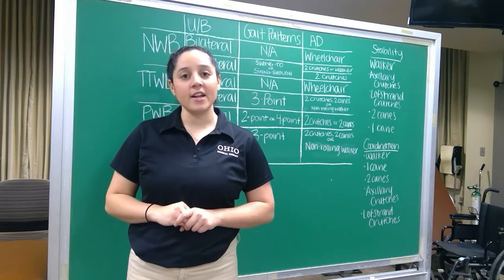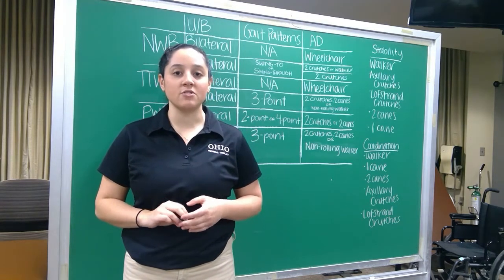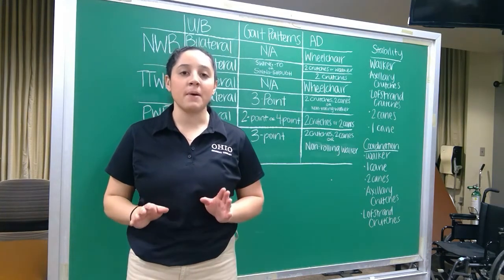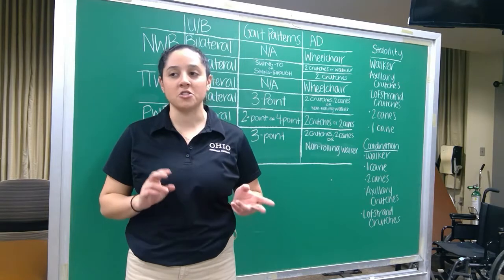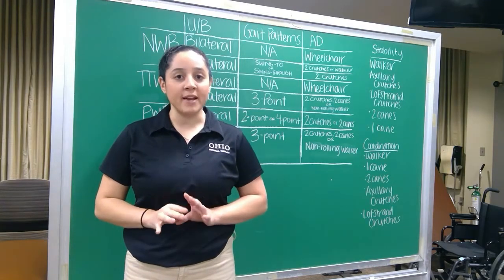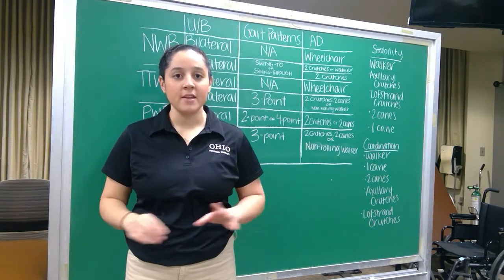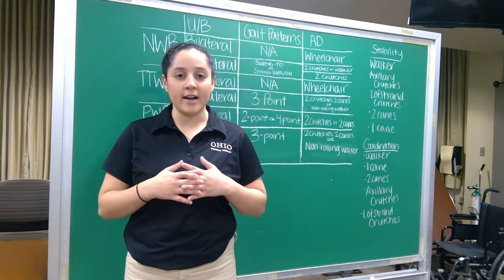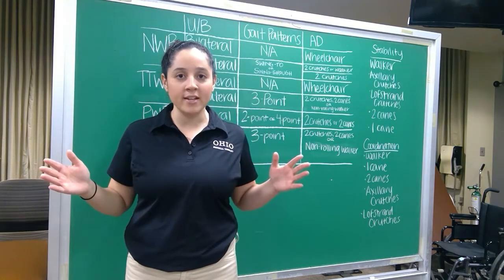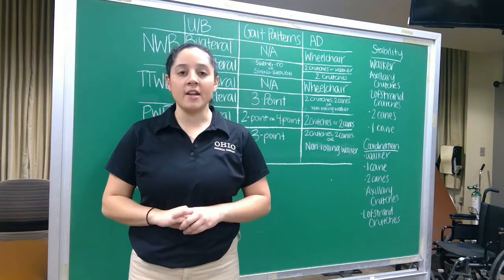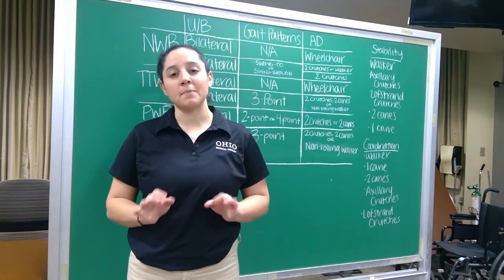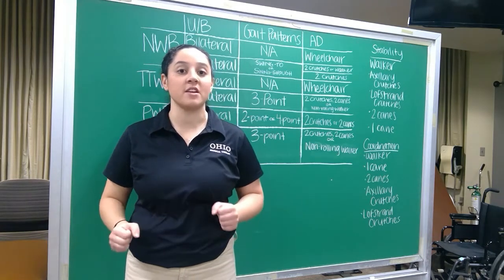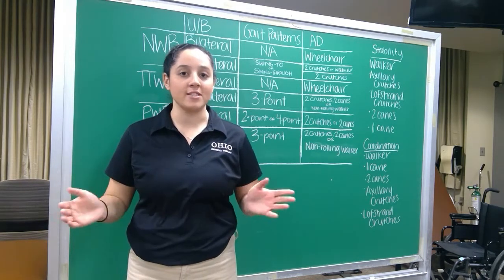Next is weight-bearing as tolerated, which means the patient is allowed to weight-bear as much or as little as they would like on the affected limb. This is totally dependent on their strength as well as pain tolerance — it is determined by the patient. Lastly, full weight-bearing means you are allowed to apply 100% of your weight onto the affected limb. If an assistive device is used, it would typically be for balance reasons, not any weight-bearing deficit, so they're allowed to ambulate as normal.